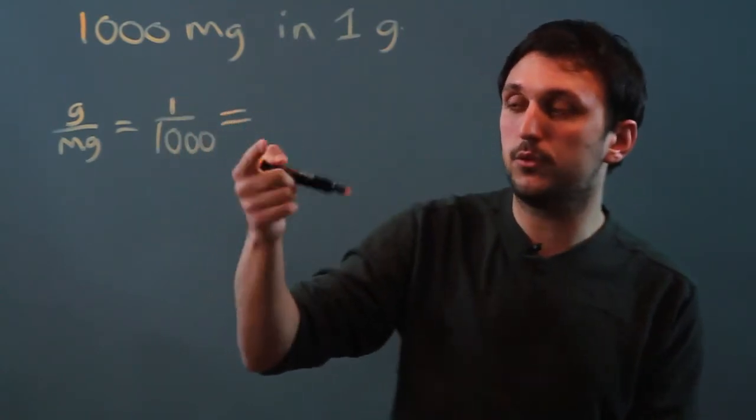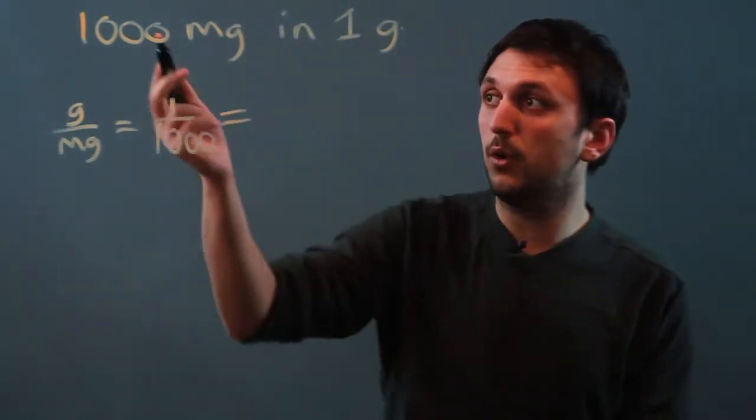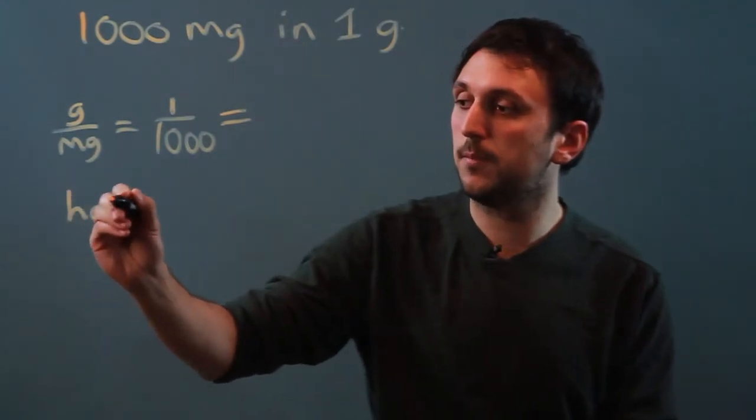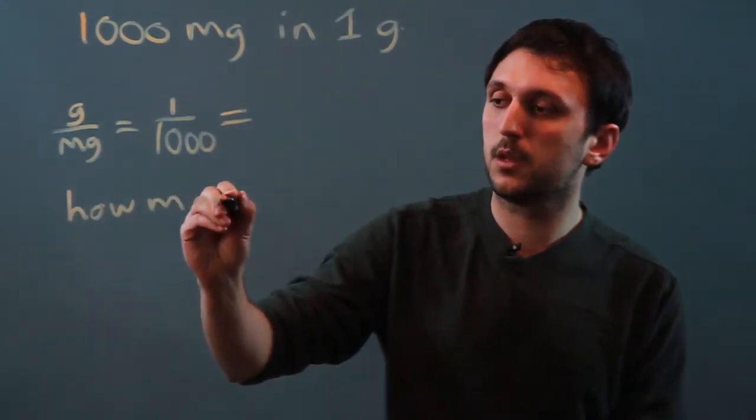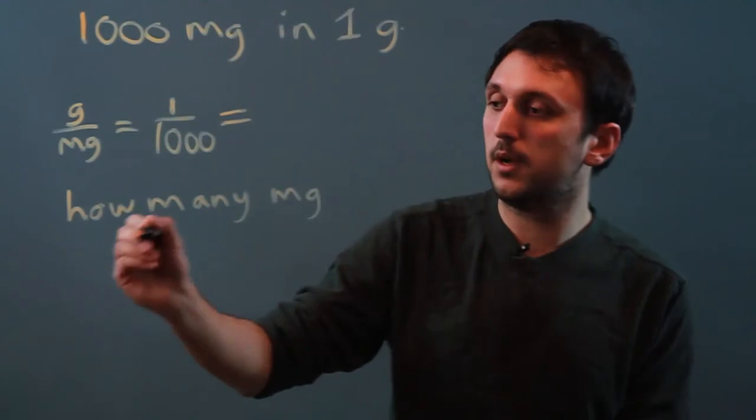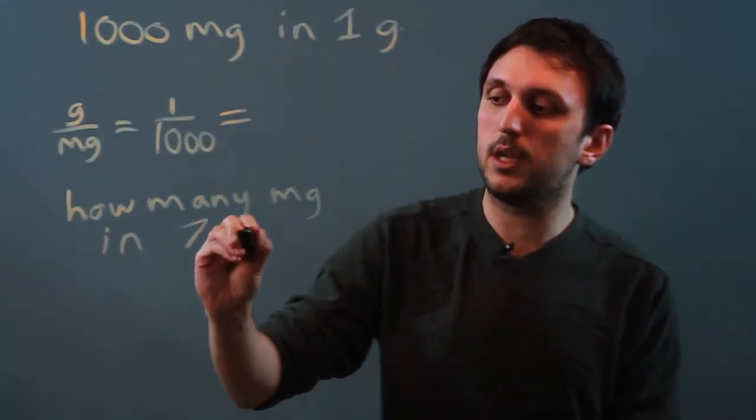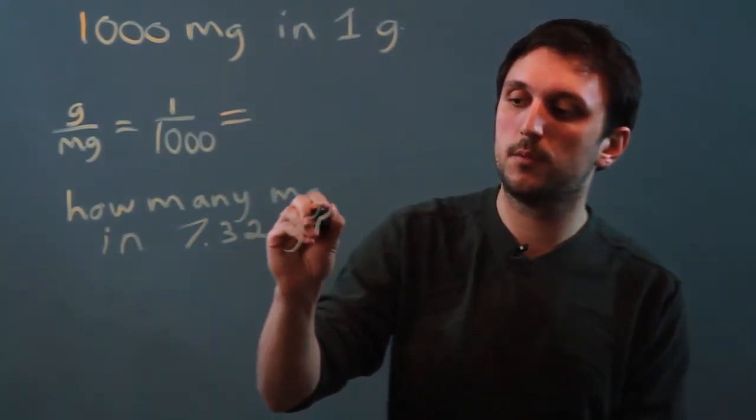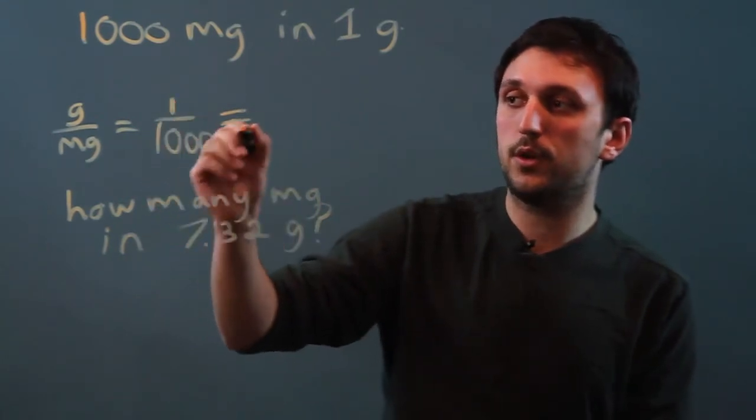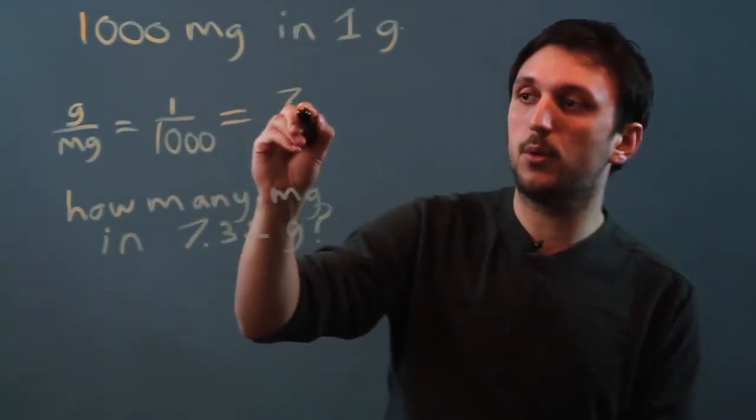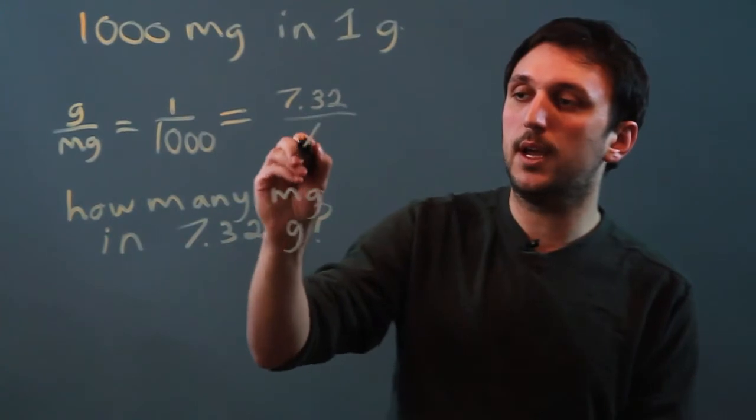We set that equal to whatever we want to find. So, what if we wanted to say how many milligrams in 7.32 grams? And we would just say one over a thousand equals 7.32 over x.